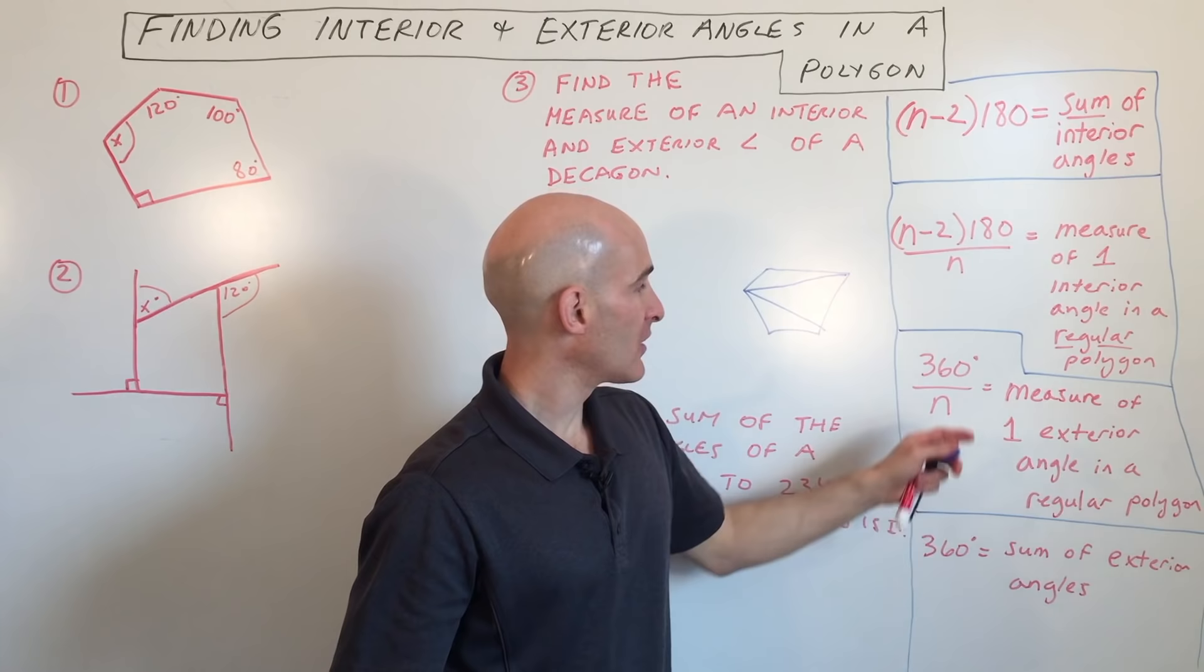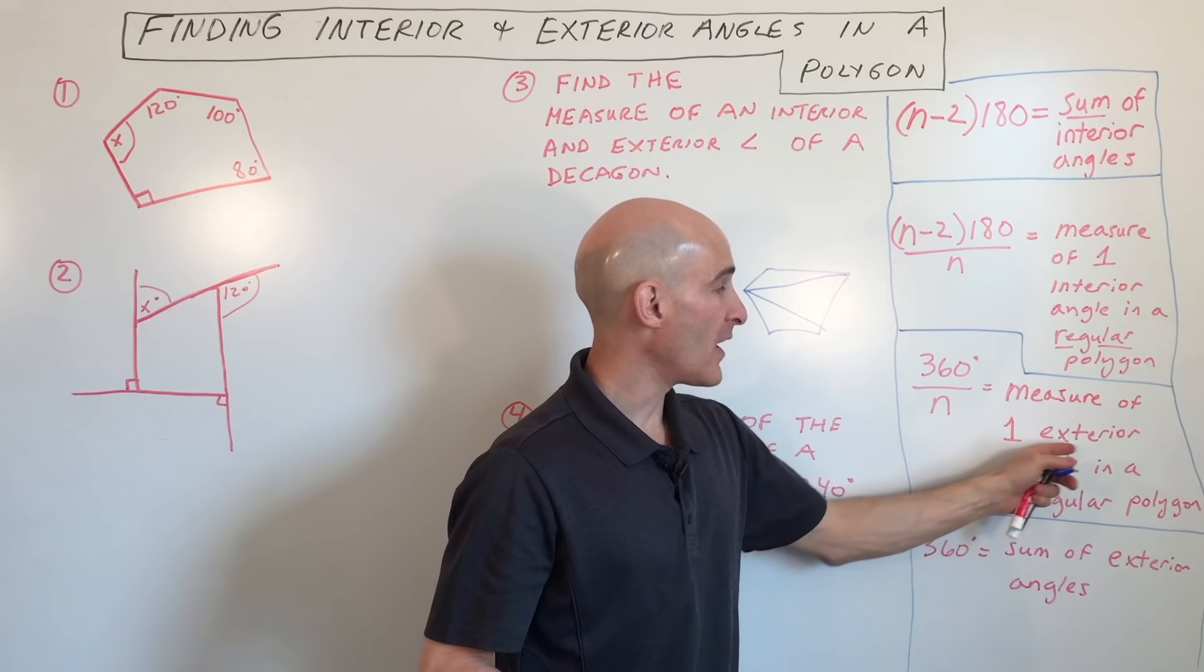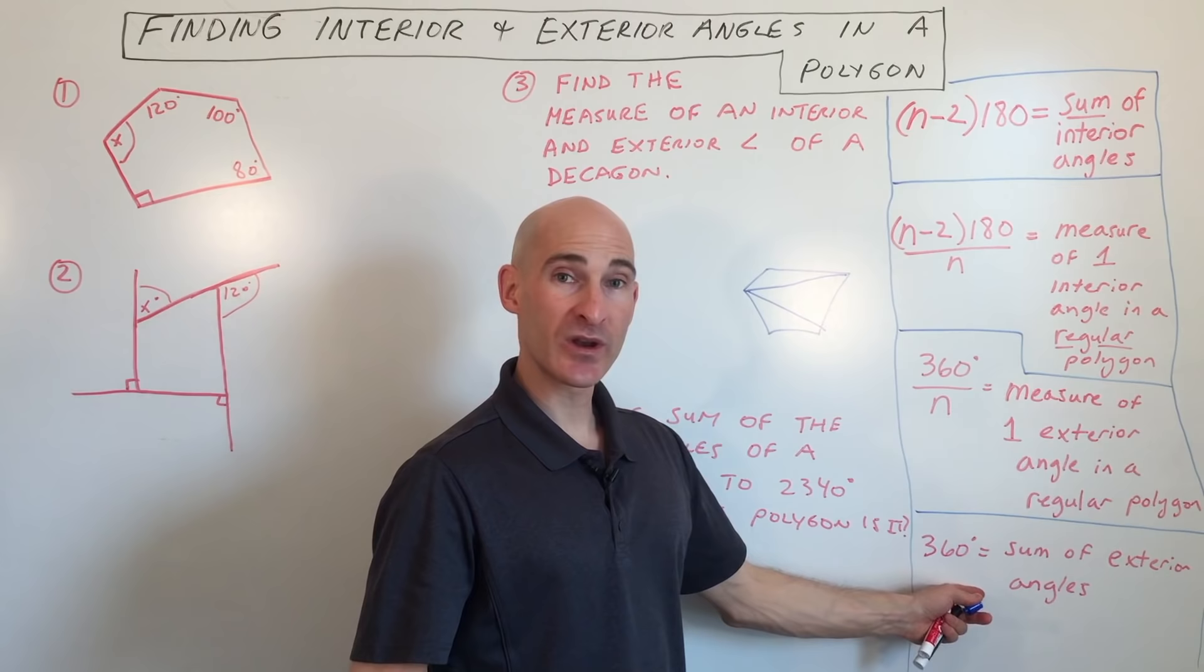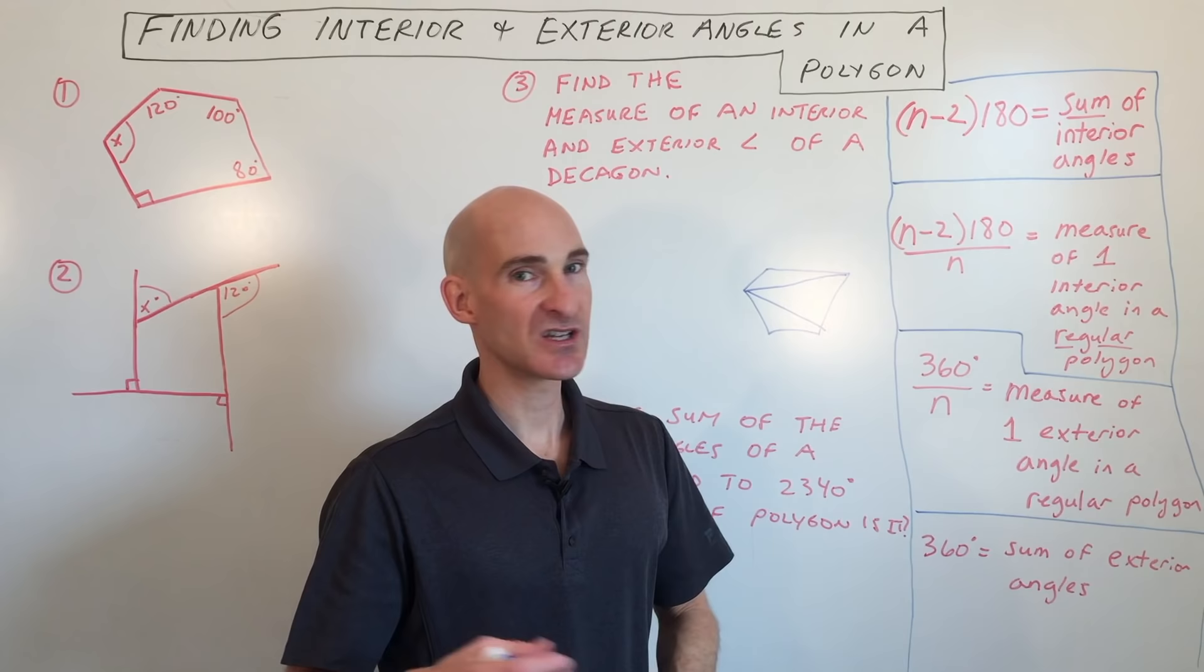This formula 360 divided by n is to find the measure of one exterior angle. That's the angle on the outside of the polygon. Again, if it's a regular polygon, meaning that all the angles are the same, you take 360 divided by n. And then this last one here is just that the sum of all the exterior angles in a polygon, they're always going to add up to 360. It doesn't have to be regular. They're always going to add up to 360.